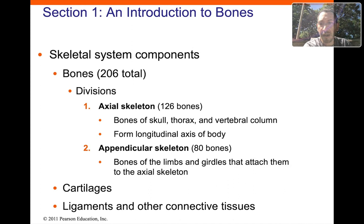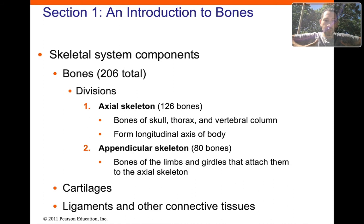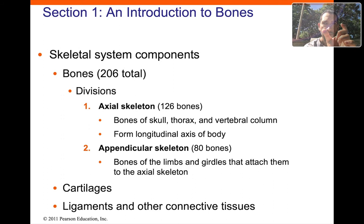To divide the skeleton into two divisions, there's the axial and the appendicular. The axial consists of the skull — think of the axis — the vertebral column, the ribs, the sacrum (five fused bones), and the coccyx (roughly four fused bones).